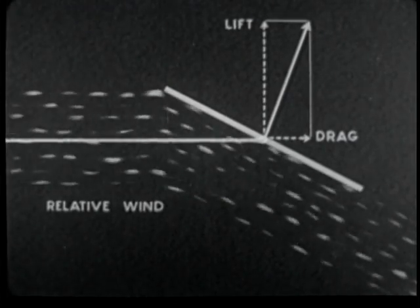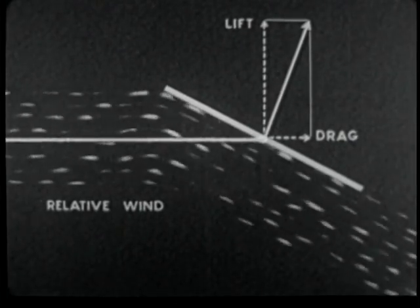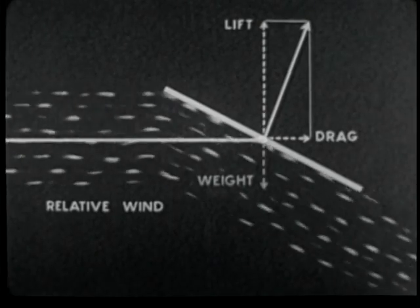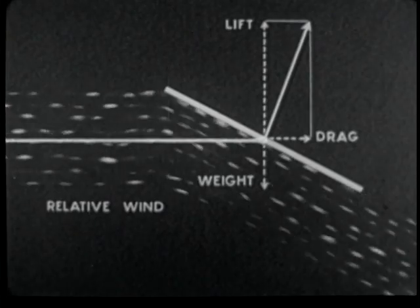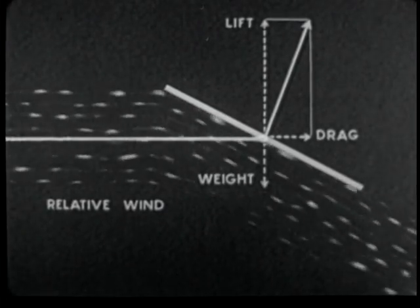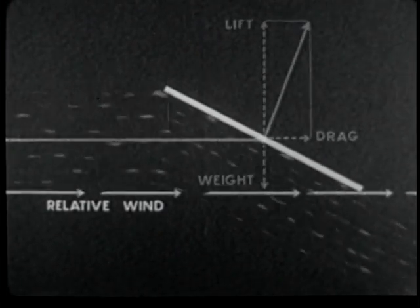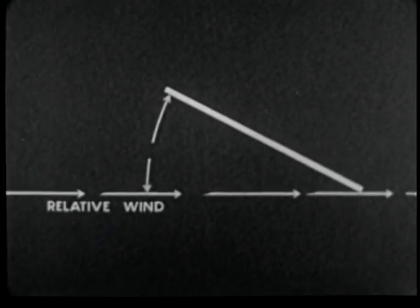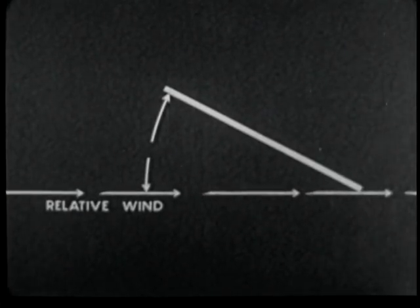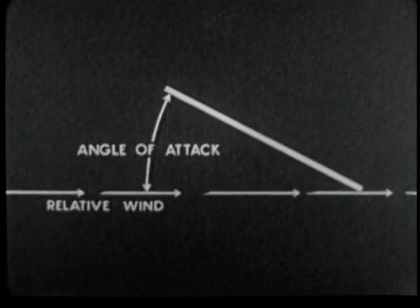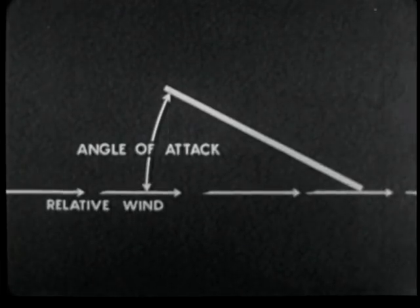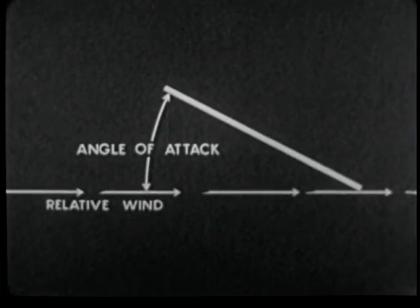If the plate is held in a horizontal airstream in this manner, lift is opposed by the weight of the plate and drag is opposed by the tension on the cord. The acute angle between the relative wind and the face of the plate is called the angle of attack. This angle may have any value from zero to 90 degrees. It may be either positive or negative.